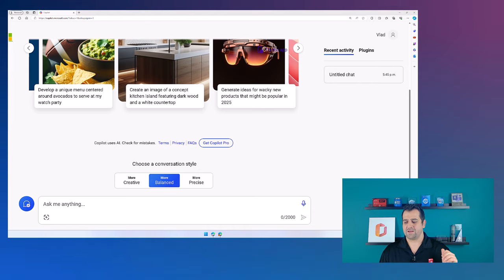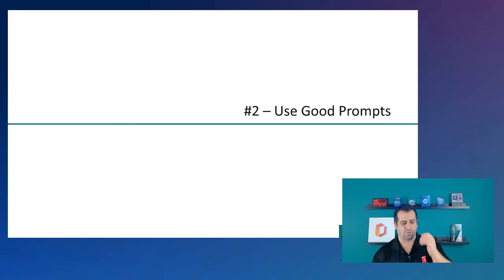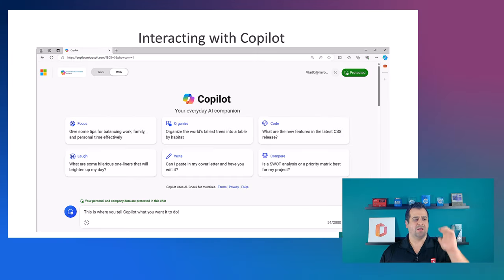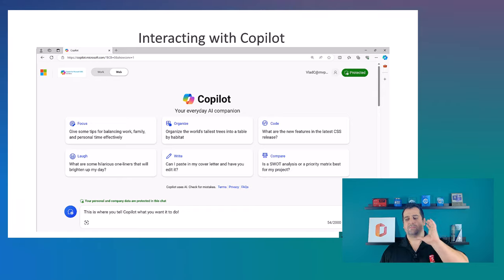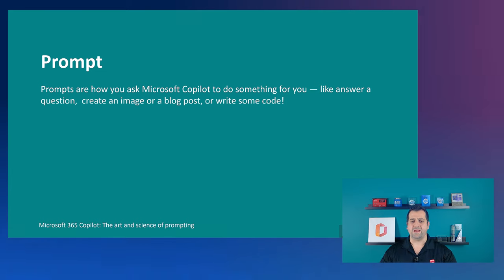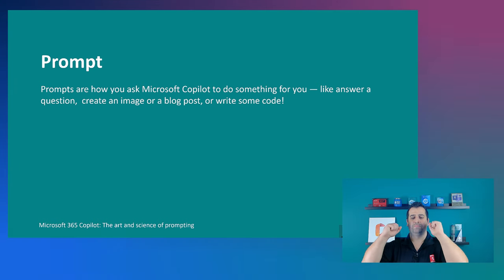That was it for tip number one. Now let's switch to tip number two: use good prompts. A prompt is every single thing that you tell Copilot to do. Prompts are simply how you ask Copilot to do something for you — it can be answering a question, creating an image, creating a blog post, writing some code. All of that is a prompt. Prompts are not unique to Microsoft Copilot; they are used in all generative AI tools such as ChatGPT, Gemini by Google, and Microsoft Copilot.